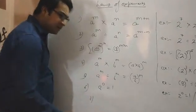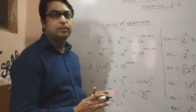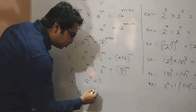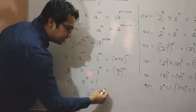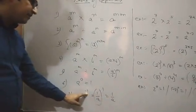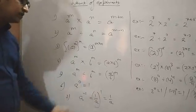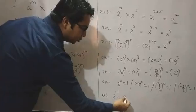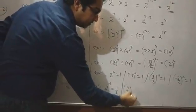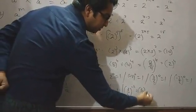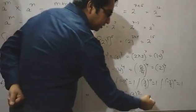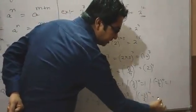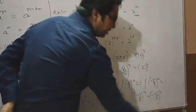Now the last law of exponent, number 7 is: when there is a negative power on the base, then do the reciprocal to make the power positive. Like, A raised to the power minus 1 is equal to 1 upon A. A raised to a negative power — do the reciprocal of the base. For example, 2 raised to the power minus 1 equals 1 upon 2, or 3 upon 2 raised to the power minus 2 equals 2 upon 3 raised to the power 2.